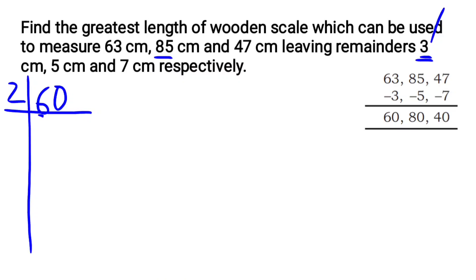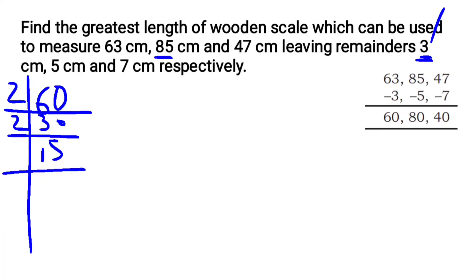Finding the prime factors of 60: 2 times table gives 30. Again 2 times table gives 15. The 2 times table cannot be used again since 15 is odd. So 3 times table gives 5. Then 5 times table gives 1.